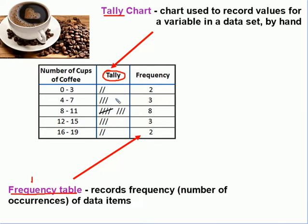So in this case, we have 2. We counted 1, 2, so we have a frequency of 2 for people who had 0 to 3 cups of coffee. In this one, we have a frequency of 3 because there were 3 people who had between 4 and 7 cups of coffee. Here we have a frequency of 8 because there were 8 people who had between 8 and 11 cups of coffee, and so on. And that's all we're doing when it comes to tally charts and frequency tables.